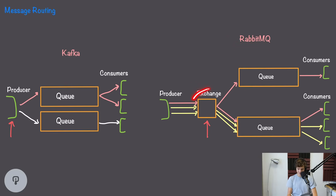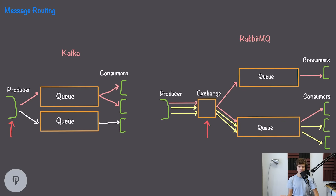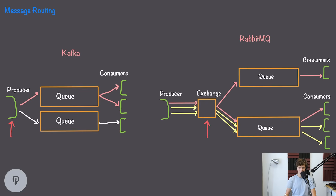RabbitMQ, on the other hand, introduces exchanges which take in all of the messages and route them to different queues. This exchange can route a message to one of two queues based on properties of that message, and it can also handle duplicating messages between multiple queues to enable a fanout-style approach. This gives consumers control over what messages they're consuming. In a situation where we're not fanning out, this enables us to balance the load between multiple consumers much better, especially for tasks that might have variable time requirements.